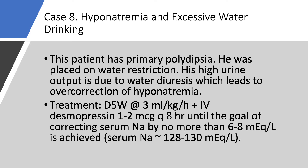The starting serum sodium was 122. Add 6 to 8 to get a goal of 128–130. Once you reach that goal, you can stop. But as long as the patient is urinating, continue to replace. This is an example where you really need to check serum sodium every 2 to 4 hours. You need to stay on top of this — otherwise you can end up with severe overcorrection of hyponatremia.